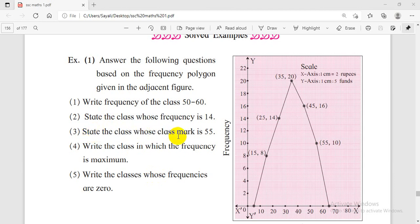State the class whose class mark is 55. 55 is the class mark of which class? 50 and 60. The midpoint, the class mark, is calculated by taking the lower limit of the class plus upper limit of the class, divided by 2. 50 plus 60 is 110, divided by 2 is 55. The class whose class mark is 55 is 50 to 60.